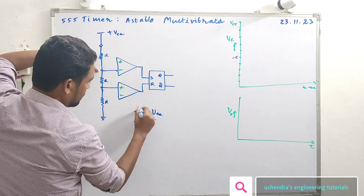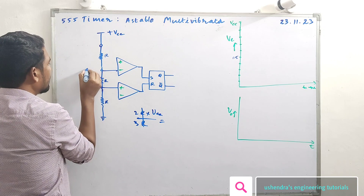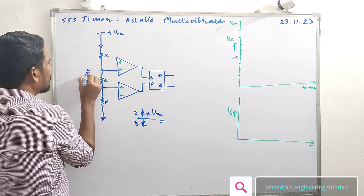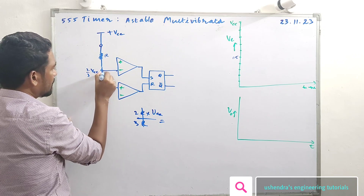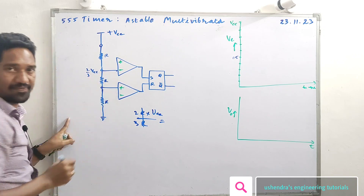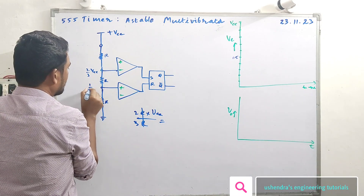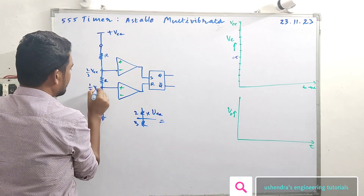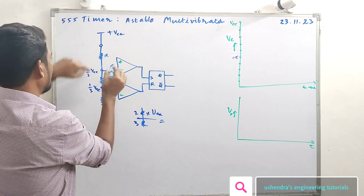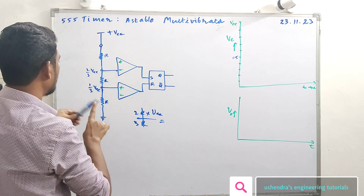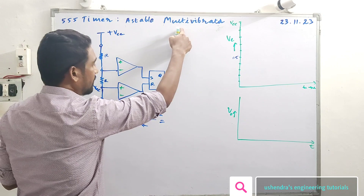So R can be used. At point E, the voltage is two-thirds VCC — that is 0.666 VCC. And there is one-third VCC. All right? Here is the connection for the astable multivibrator.